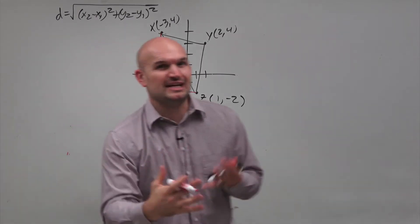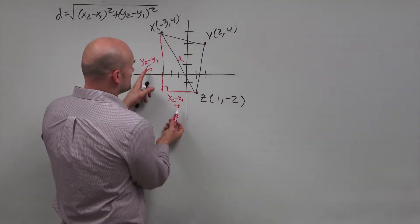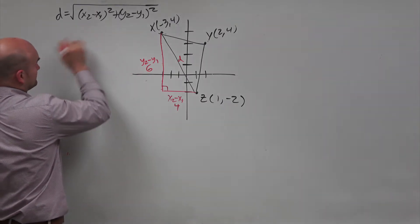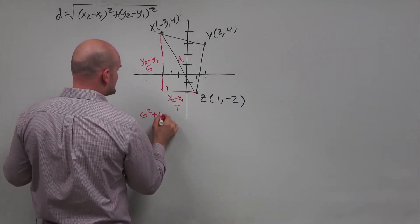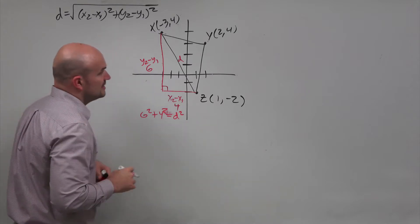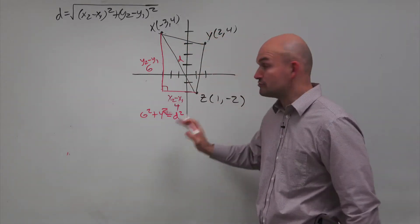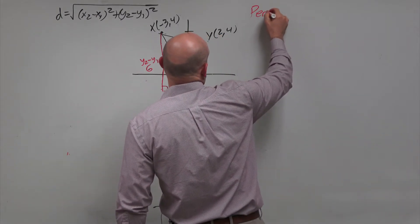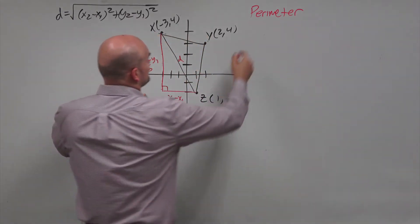We don't really care if it's negative or positive, what direction we're counting. The Pythagorean theorem tells us we're going to square these two values. In this case, if you're looking at the Pythagorean theorem, 6 squared plus 4 squared equals d squared. The way that we're going to write this, we're going to use our notation for our side lengths, because remember the perimeter is the sum of the sides.